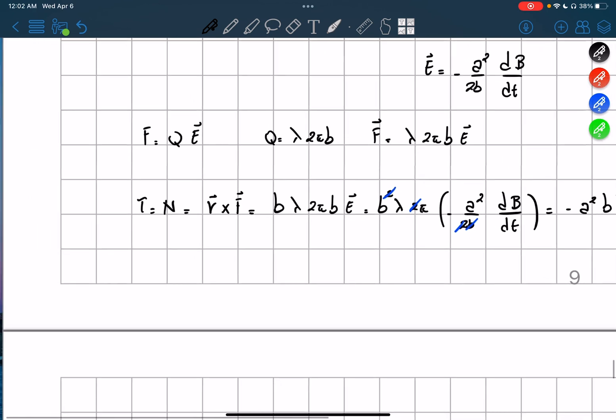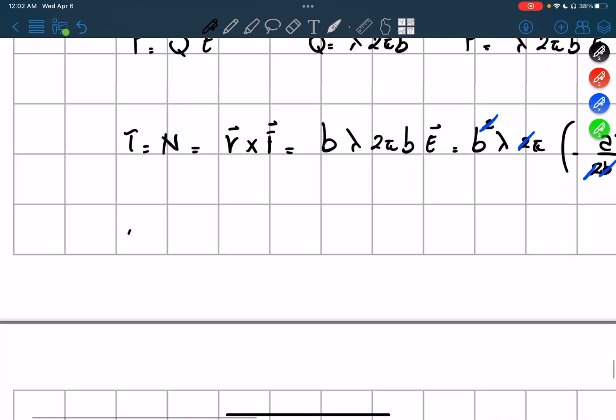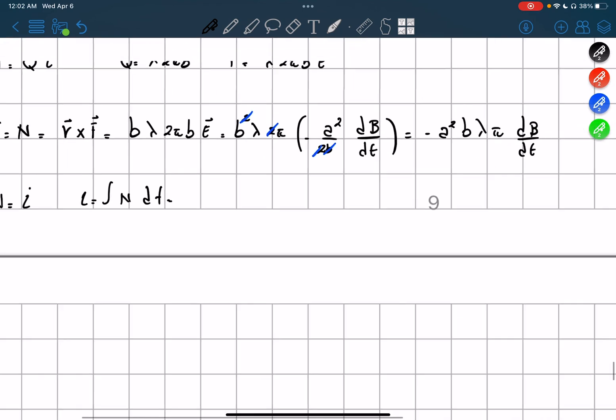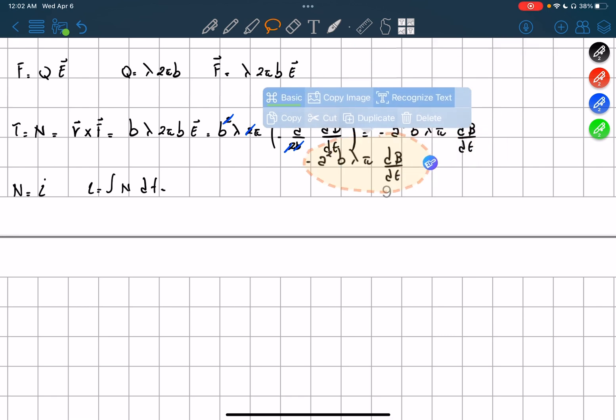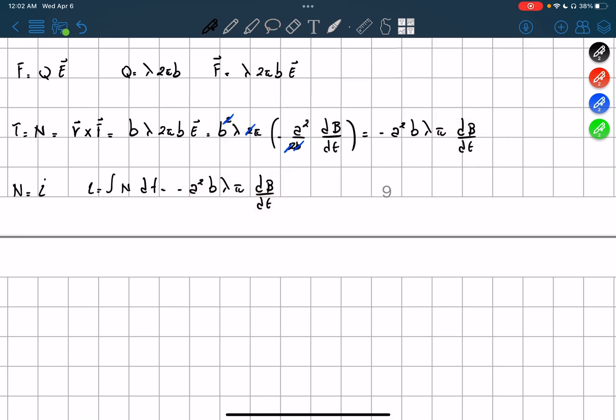And now we have to find the angular momentum. The angular momentum is what? Well, let's take a step backward. So we know that torque equals the angular momentum derivative in time. Therefore, the angular momentum is the integral of our torque in terms of time. So it equals this part right here, and then derivative in terms of time.